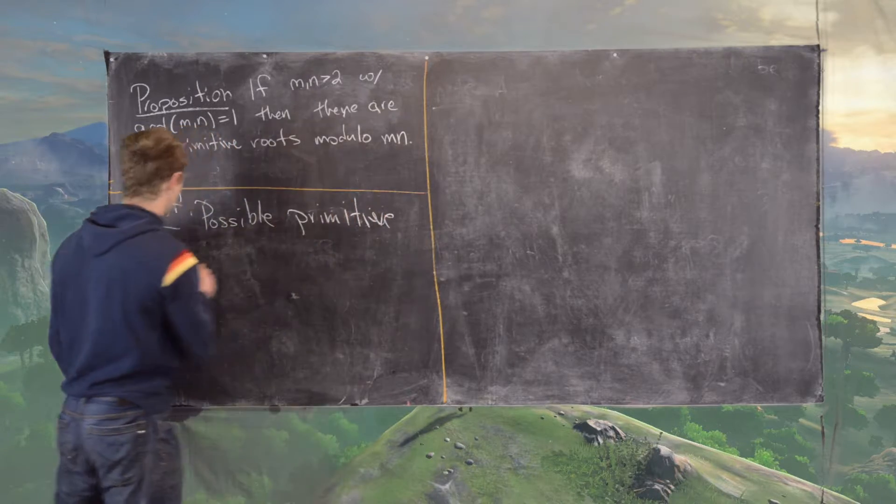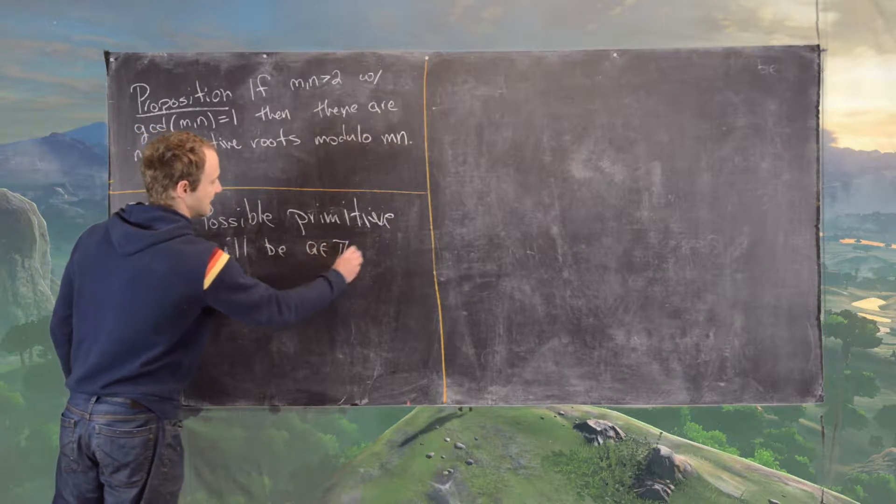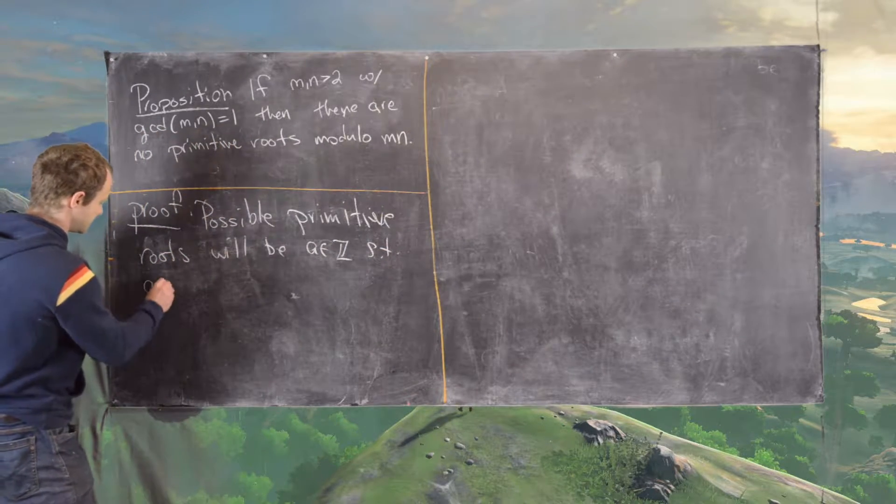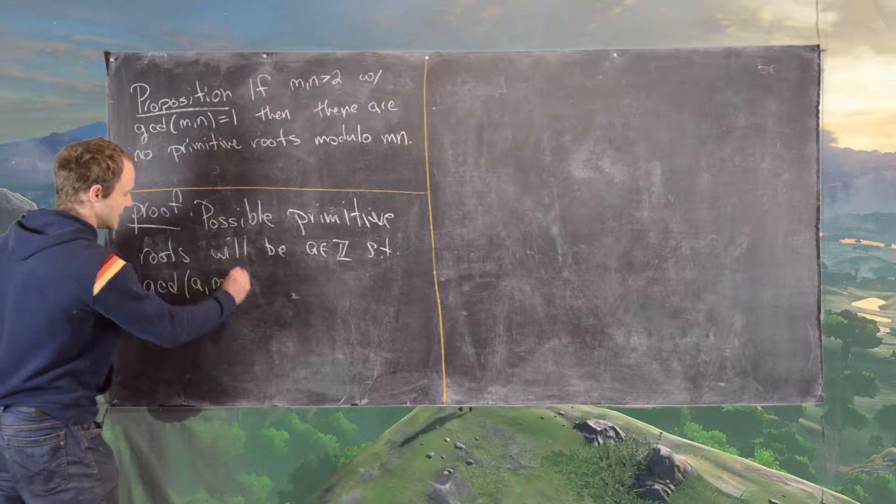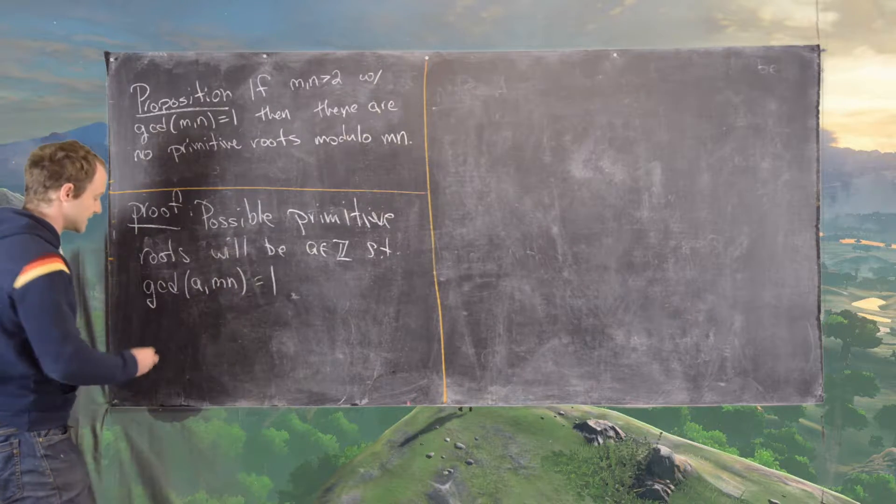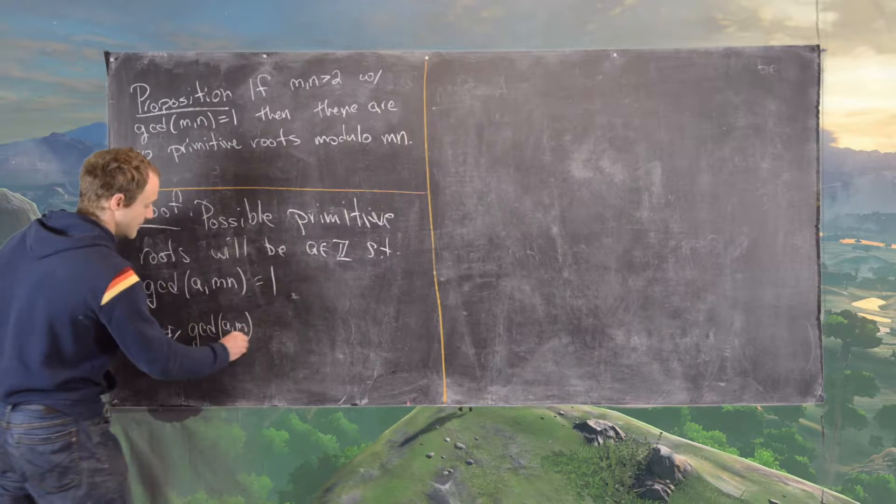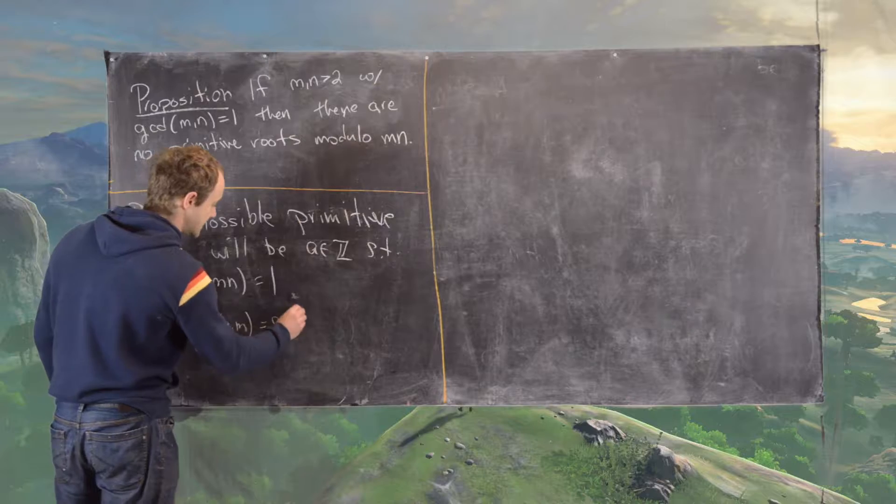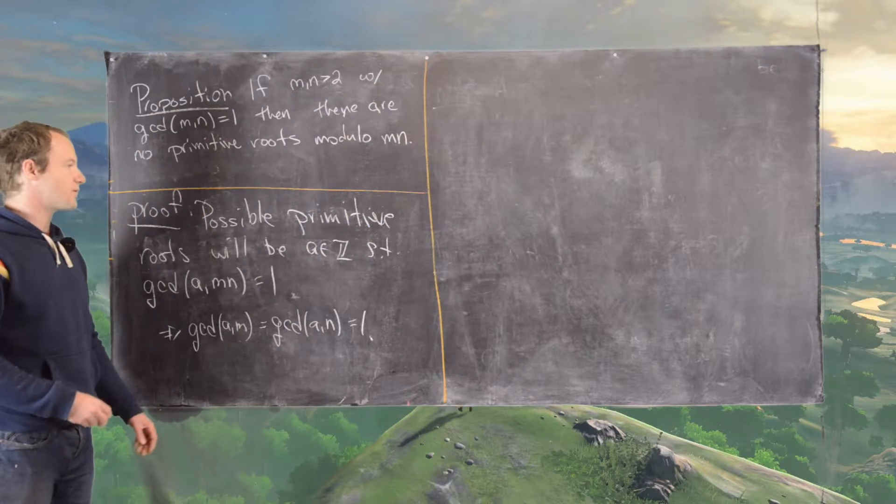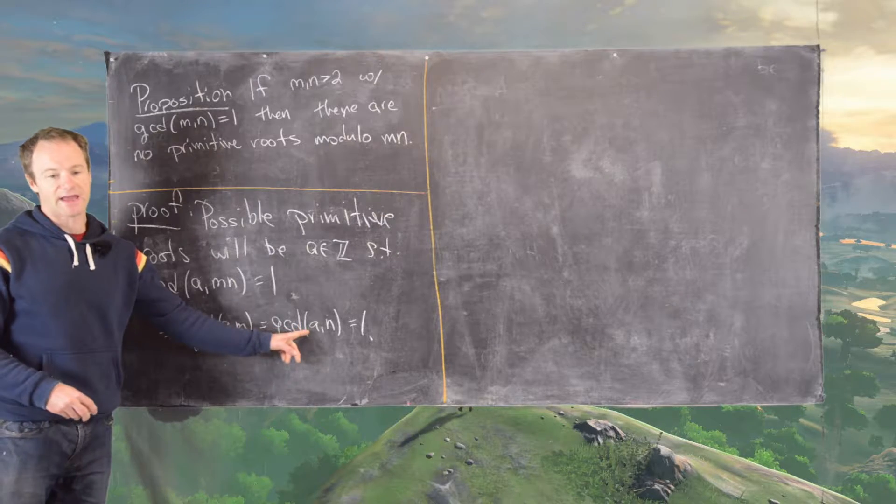So primitive roots will be integers A such that the GCD of A with M and N equals 1. Now notice since M and N are relatively prime, that tells us that the GCD of A with M equals the GCD of A with N, which are 1. So this is good to notice as our starting point—we're starting off with integers that are relatively prime to both M and N.